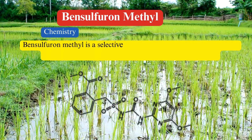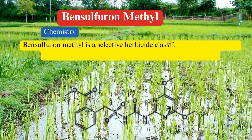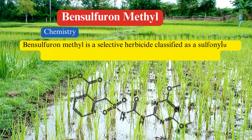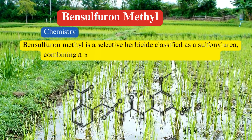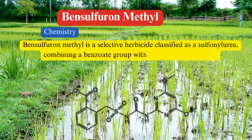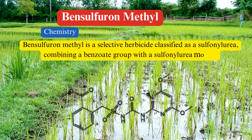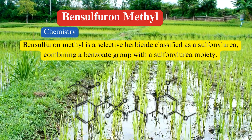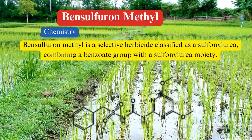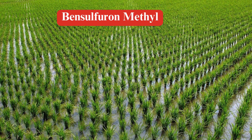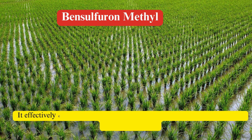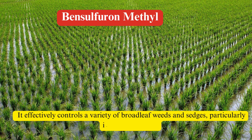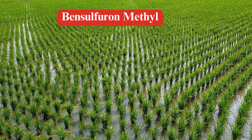Bensulfuron methyl is a selective herbicide classified as a sulfonylurea, combining a benzoate group with a sulfonylurea moiety. It effectively controls a variety of broadleaf weeds and sedges, particularly in rice cultivation.